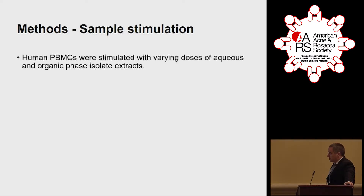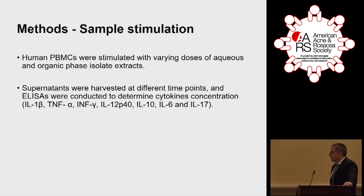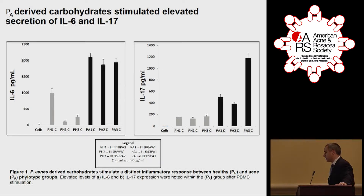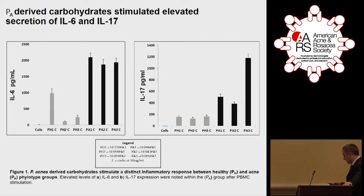We then took these extracts from the aqueous and organic phase and stimulated PBMCs at various doses, harvested the supernatant at different time points — day one and day seven — and ran a series of ELISAs to see what we were getting. Our results are quite interesting. From the aqueous phase carbohydrates, we saw a higher secretion of IL-6 and IL-17 almost exclusively within the PA group. We have our cells-alone control group, then the three healthy strains and the three acne strains, and what we see clearly is that the acne strains showed a higher secretion of IL-6 and IL-17.